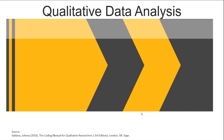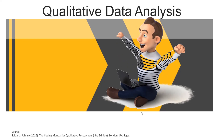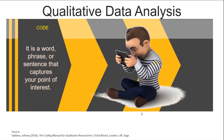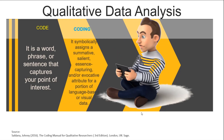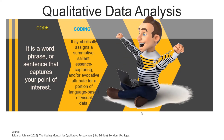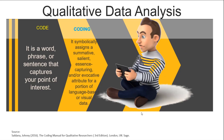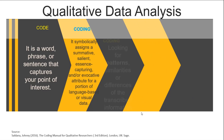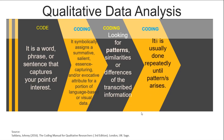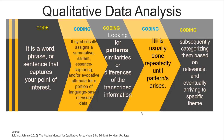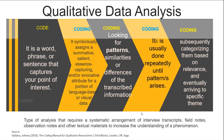For better understanding, a code is simply a qualitative inquiry which is most often a word or short phrase that captures your point of interest. When we do coding, you are actually assigning or capturing a salient attribute or characteristic to serve as your data. Once you do coding, you must look for patterns, similarities, or differences of the transcribed information. It is usually done repeatedly until patterns arise, and subsequently categorizing them based on relevance to eventually arrive at a specific theme. Qualitative data analysis requires a systematic coding of interview transcripts, field notes, observation notes, and other textual materials to increase the understanding of a phenomenon.